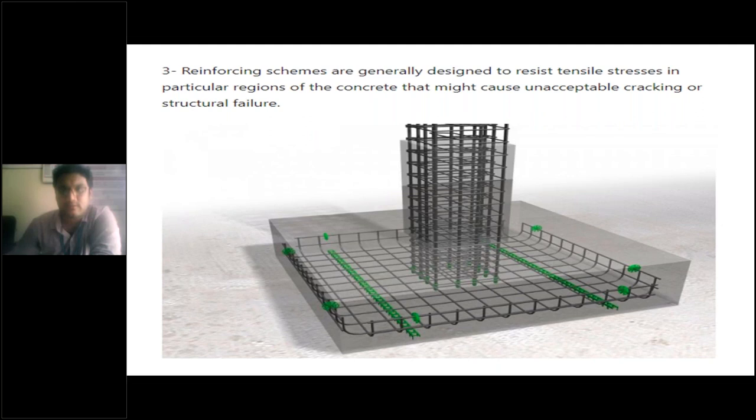Here you can see one example: a column footing reinforced with reinforcing bars. Why is reinforcement provided only at the bottom of the footing? Because the bottom of the footing acts like a beam — it is a shallow beam. To control the tensile stresses, you definitely have to provide reinforcement below the neutral axis to avoid unacceptable cracking or structural failure.